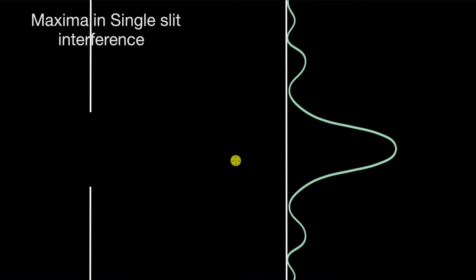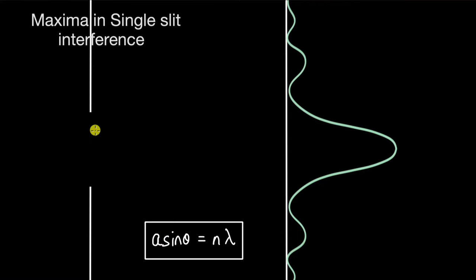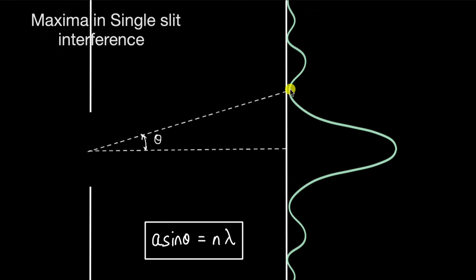In this video we will talk about where and how the maximas are formed in a single slit diffraction, and also why the intensity of the maxima decreases as you go further away from the center. We know that the condition for destructive interference is given by a sin θ = nλ, where a is the width of the slit, λ is the wavelength of the light, and θ is the angular position of the minima.